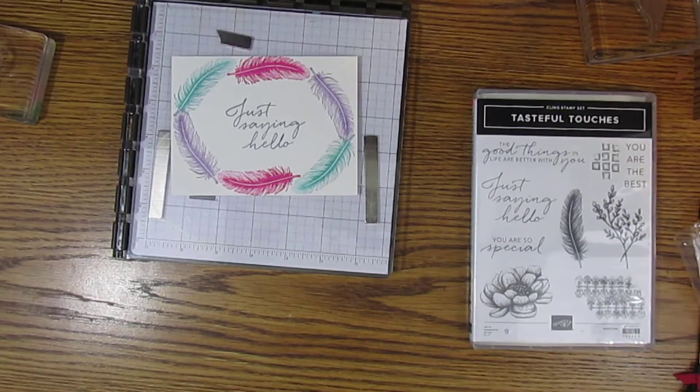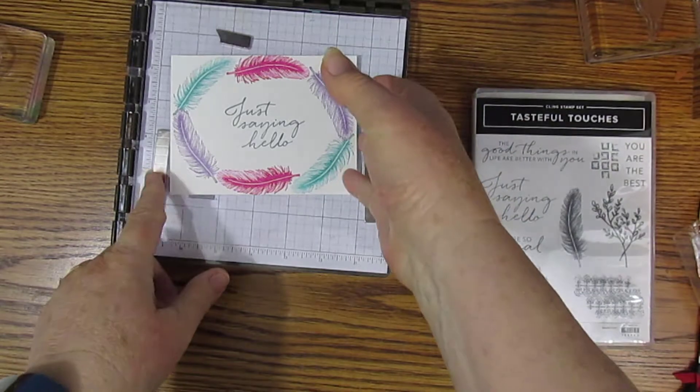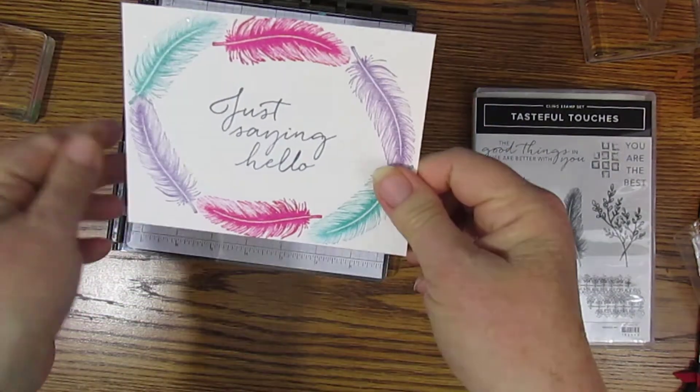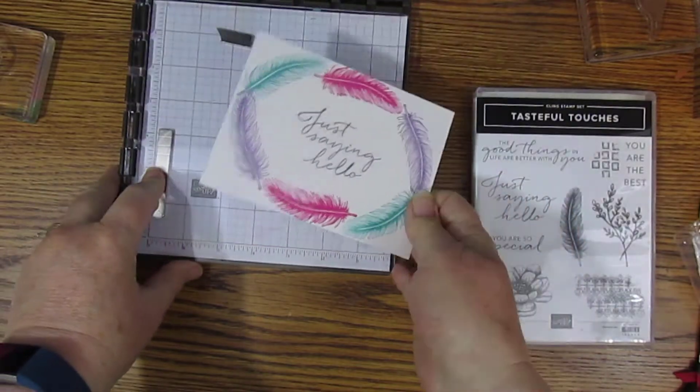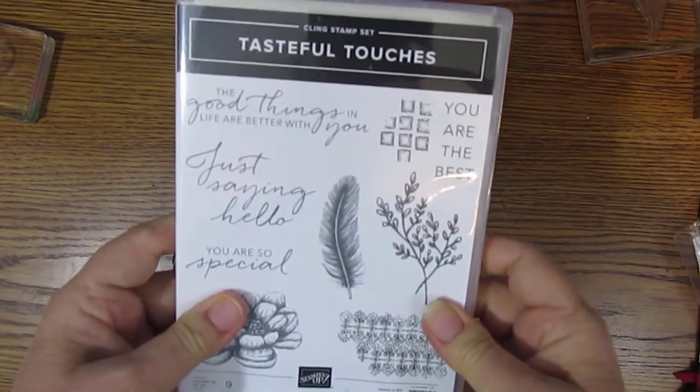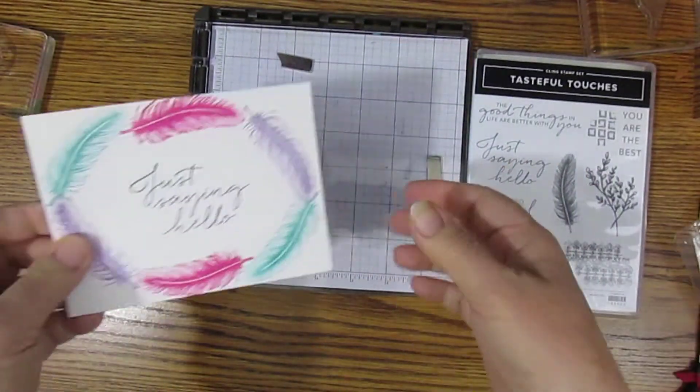Hello, this is Nindy Kerr and welcome to another Nindy's Creative Corner video. Today we will be learning about stamping multiple stamps with our Stamparatus. We will be using the Tasteful Touches stamp set and four different inks. So let's get started.